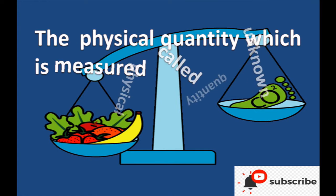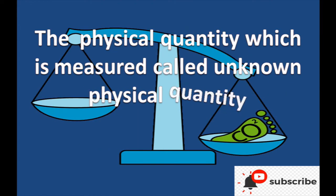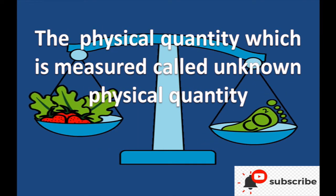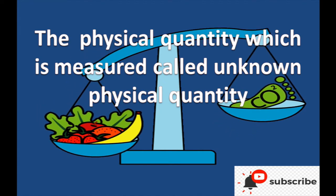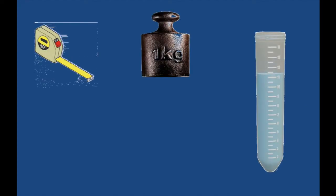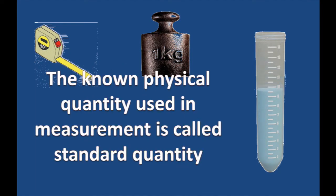The physical quantity which is measured in measurement is called unknown physical quantity. The known physical quantity used in measurement to measure unknown physical quantity is called standard quantity.